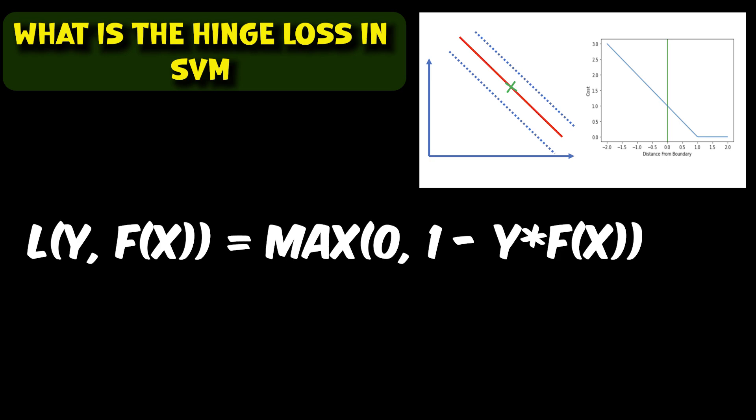The SVM optimization problem involves minimizing the sum of the hinge loss over all training examples subject to a constraint on the margin. By minimizing the hinge loss, SVM aims to find the hyperplane that separates the two classes with the maximum margin and the fewest misclassifications.